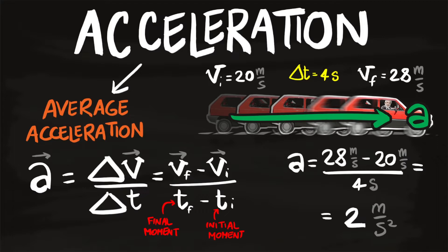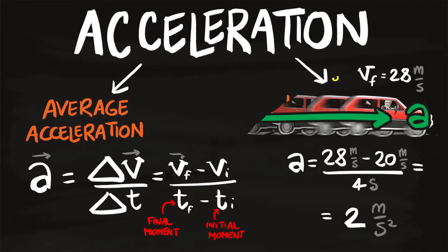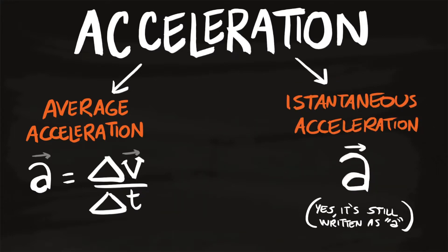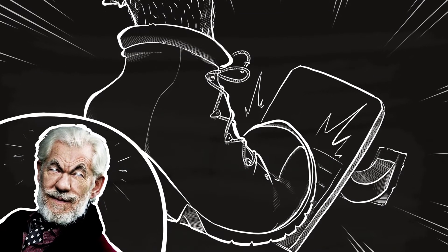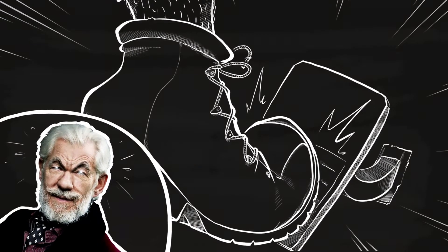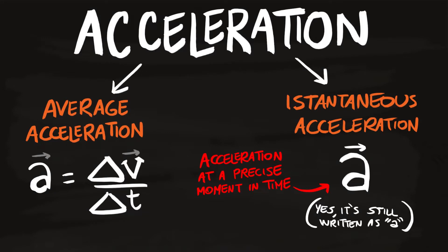Average acceleration is a vector. The second type is instantaneous acceleration — the acceleration at a precise moment in time. Unlike average acceleration, it is not Δv over anything. It indicates how rapidly grandpa's velocity is increasing or decreasing at a given instant, like how hard he is pressing the accelerator at a specific moment. Instantaneous acceleration is also a vector.